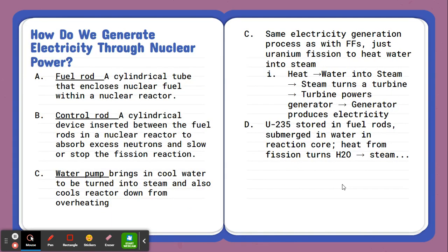Okay, now looking at how do we go about using our uranium-235 to generate electricity. Some terms we need to be familiar with before we get to the process will be what's known as the fuel rod, control rod, and water pump. So the fuel rod is going to be a cylindrical tool usually found within the reactor core. This is going to enclose the actual nuclear fuel or uranium-235.